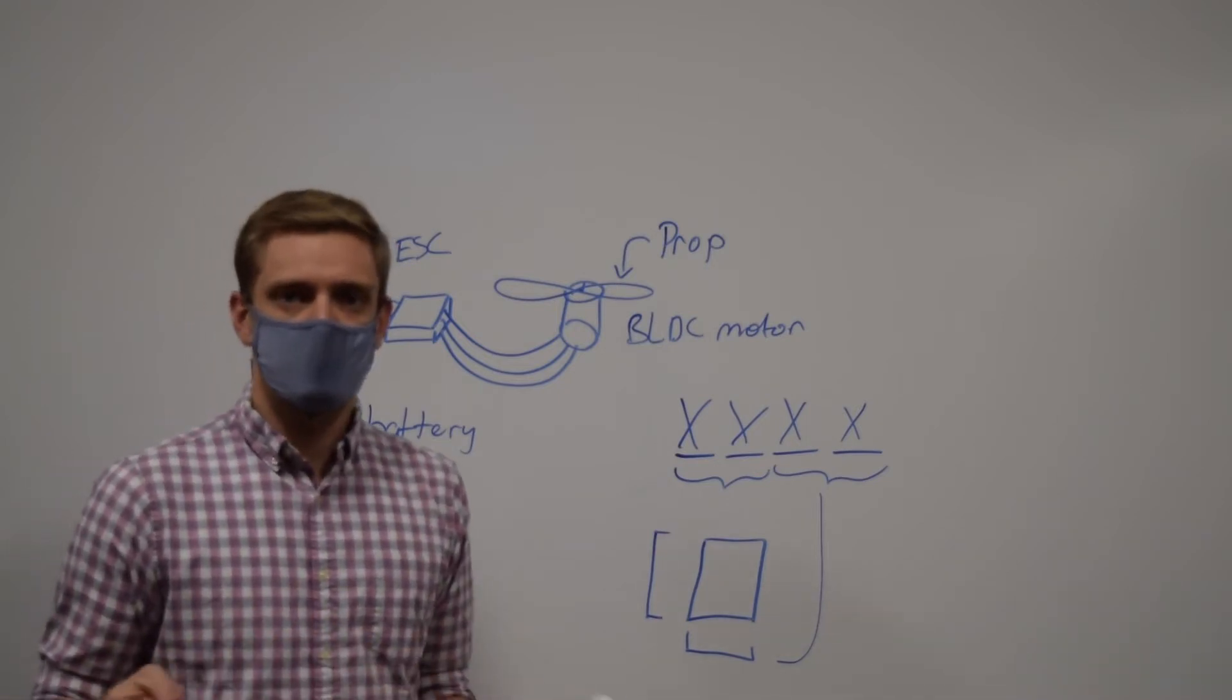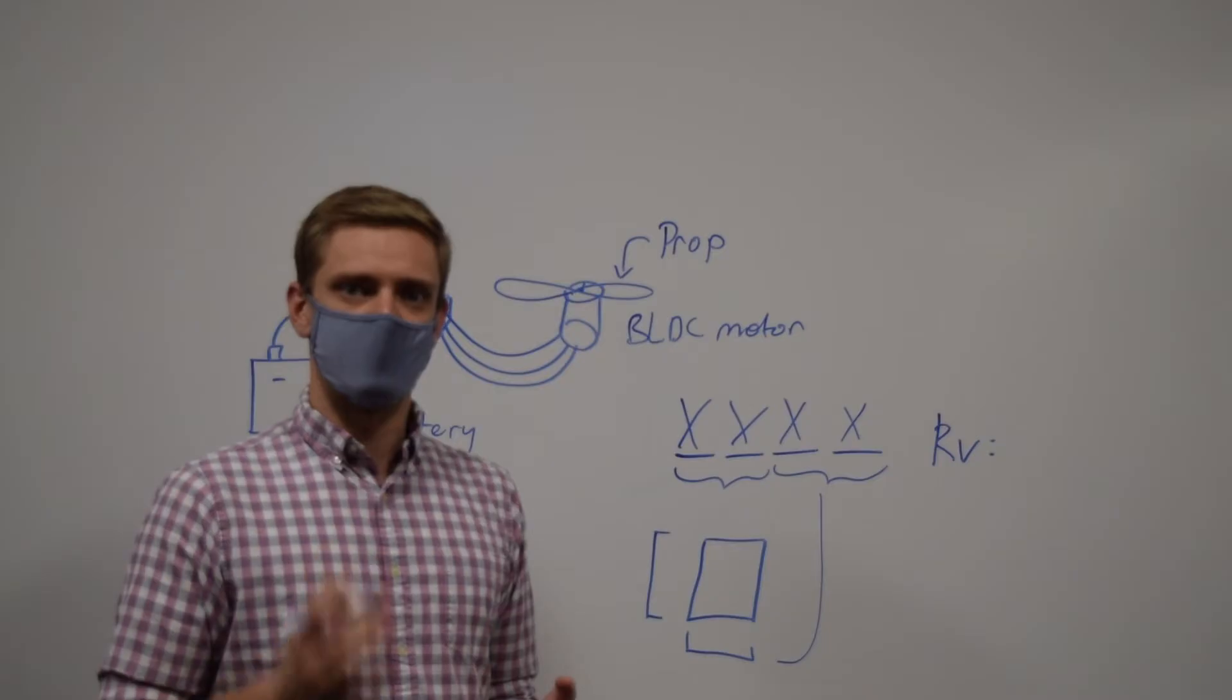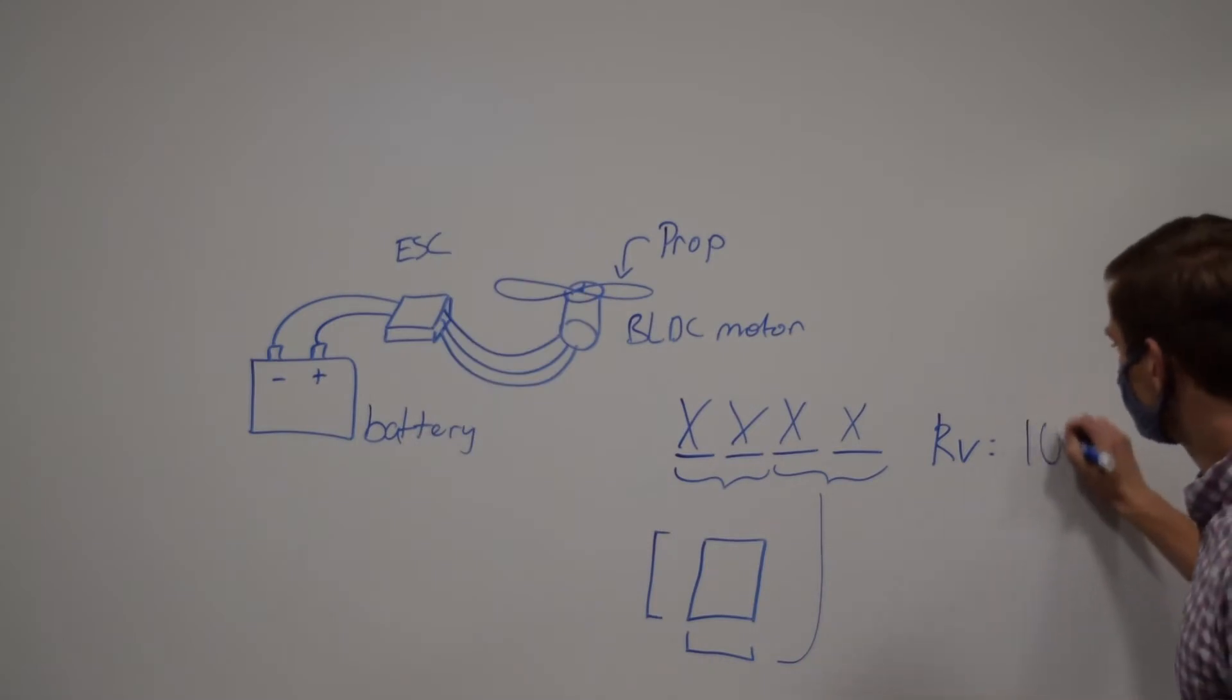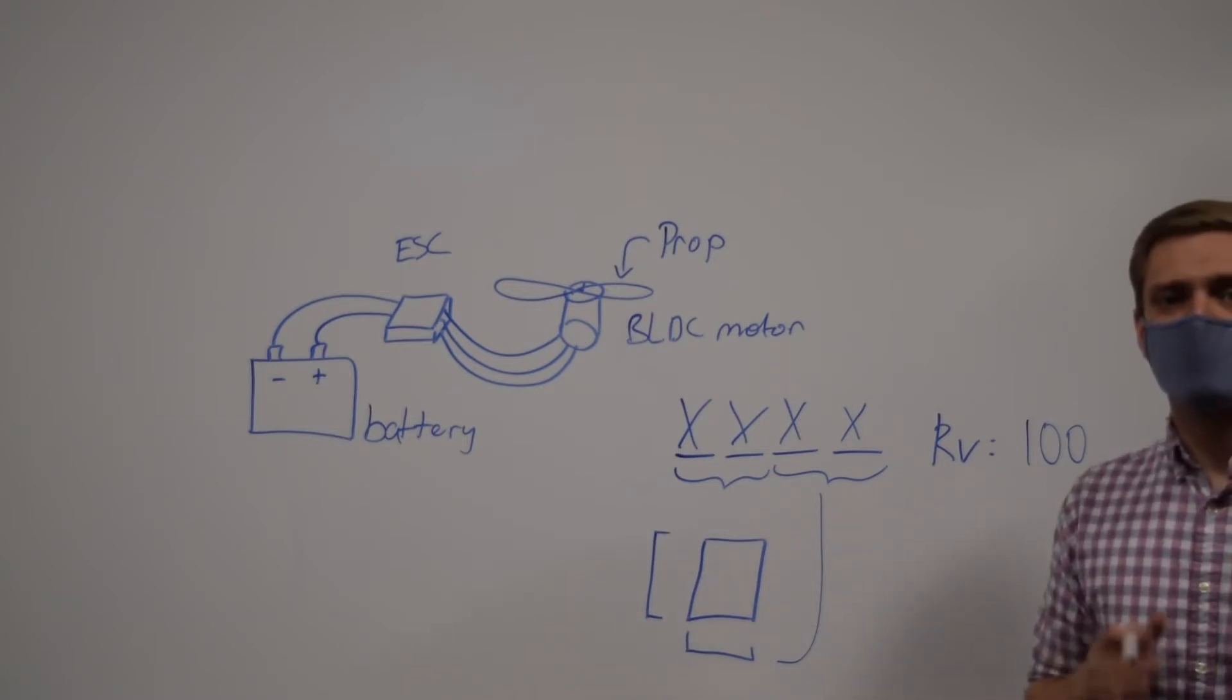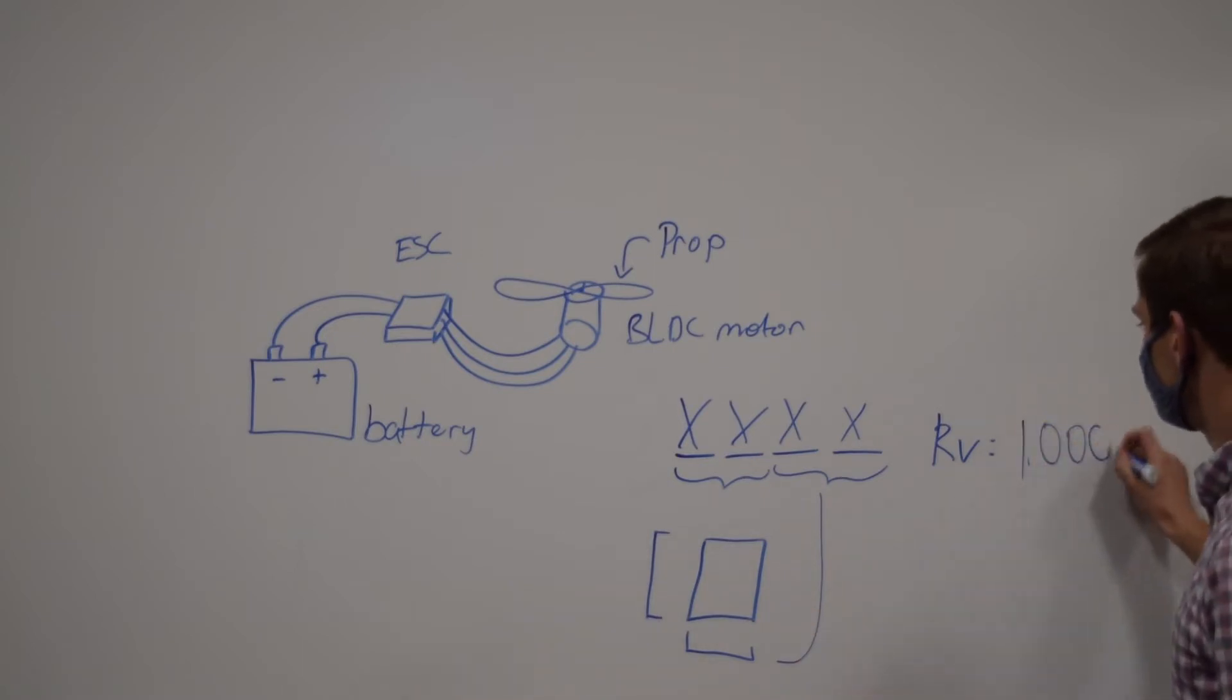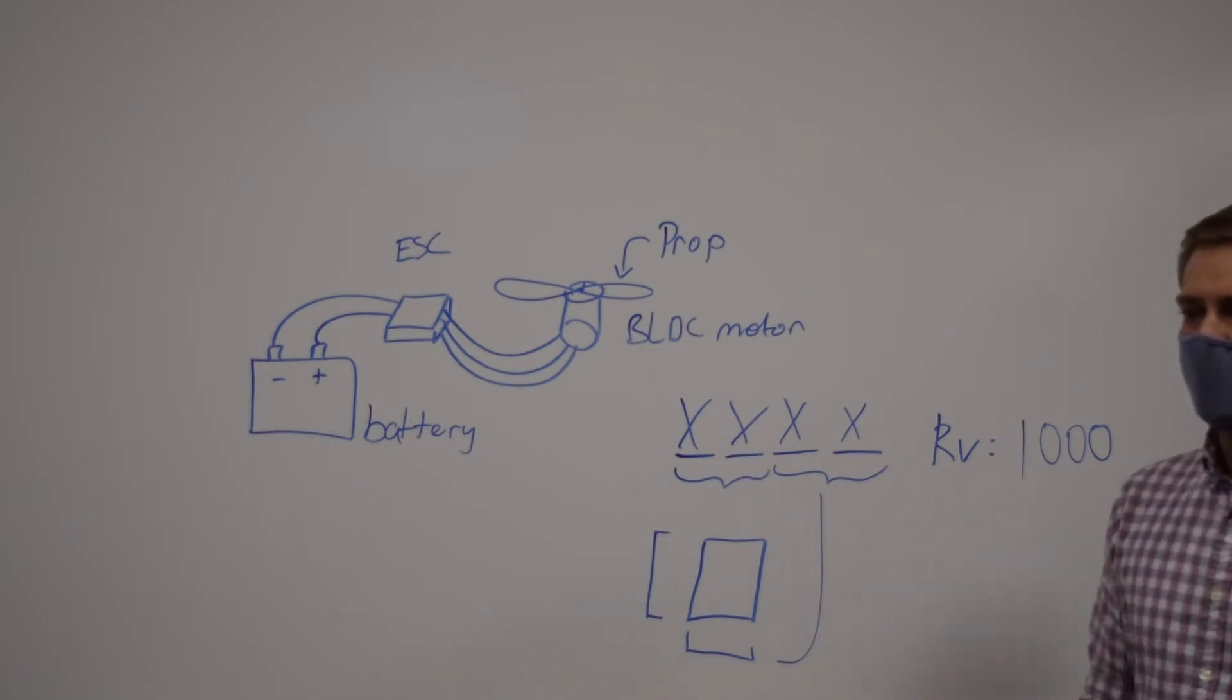The third and arguably most important value that you'll see is what's called a KV rating. KV rating means rotations per minute per volt. If you have a 100 KV rating, that means if you're supplying it with one volt of power, it will rotate at 100 RPM at its max throttle. If you have a 1000 KV motor, which is more common in our sizes, that means if you put 10 volts in and you give it full power, it'll go to 10,000 RPM, which is more like it.